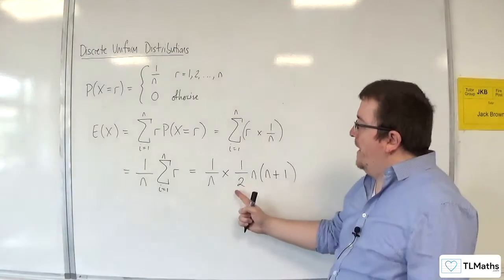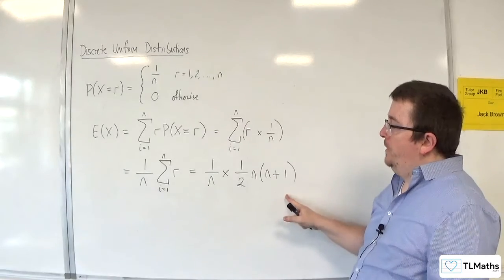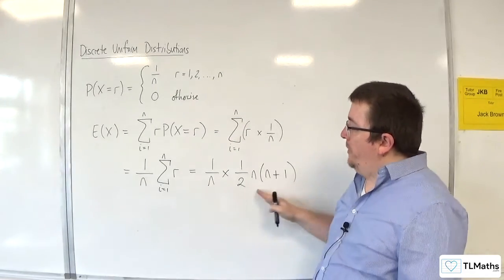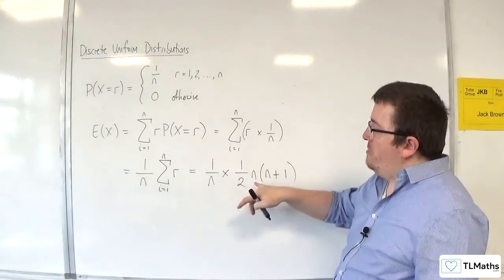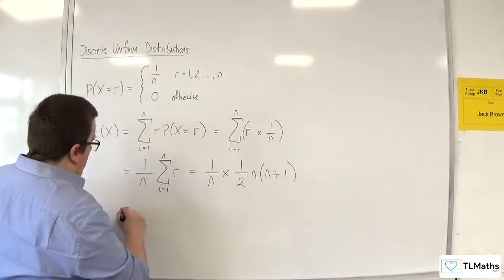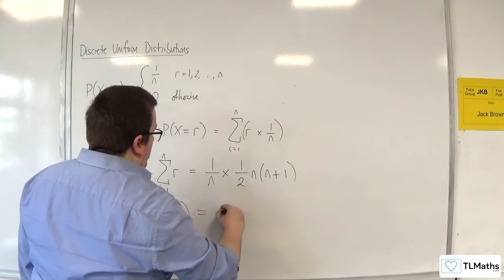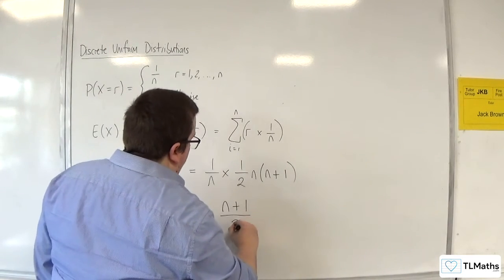So, that is the one that you need to remember because that one's not given to you in the formula booklet. Now, because we've got 1 over n times that, you can see that 1 over n is going to cancel out that n there. So, actually, we have 1 half n plus 1, or otherwise written as n plus 1 over 2.